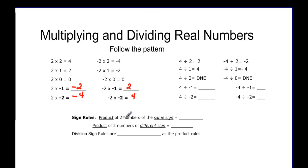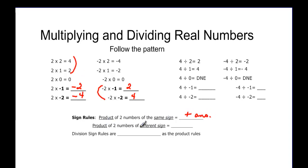If we look at the sign rules, the product of two numbers of the same sign — like these here and these here — when we have the same sign you'll notice that we always have a positive answer. And if we have a product of two numbers of a different sign, then we have a negative answer every time. It doesn't waver.